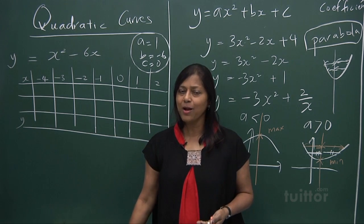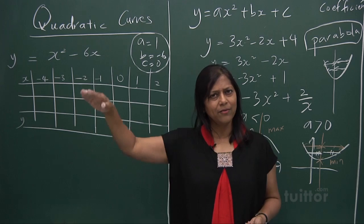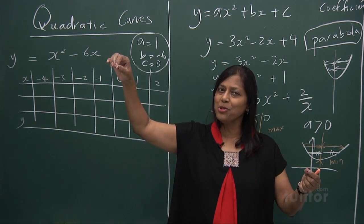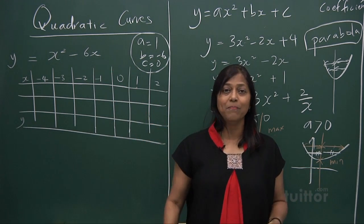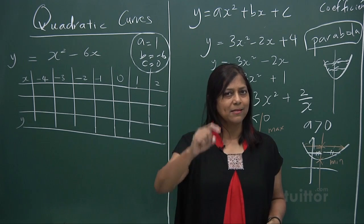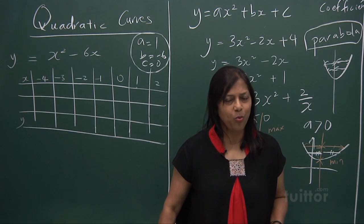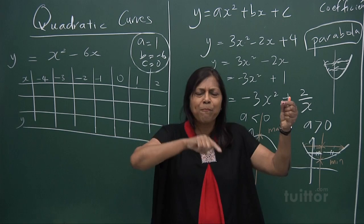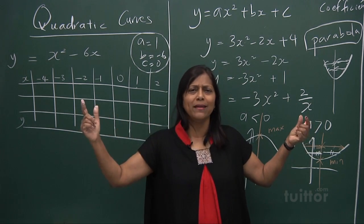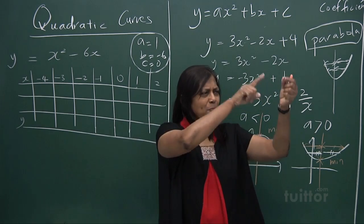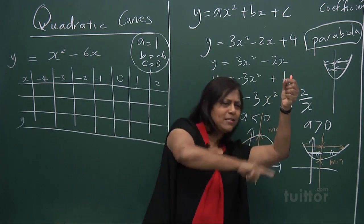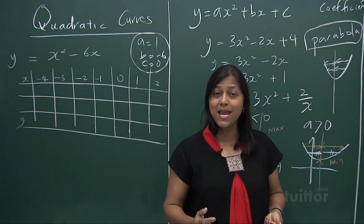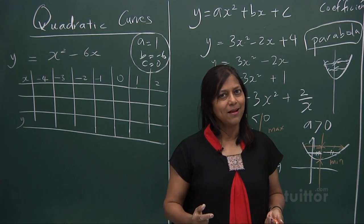Before we do the graph, we need points. We need to draw a curve, unlike a straight line — a straight line you just need 2 points. But for a curve, with only 3 points, how do you know which way the curve goes? That's why for curves we need a minimum of 6 points.